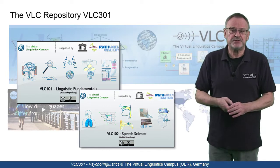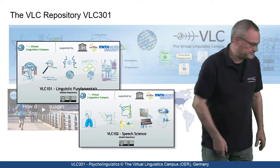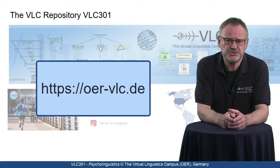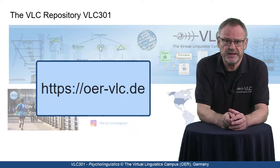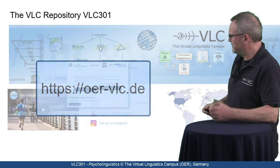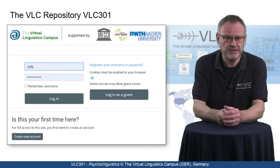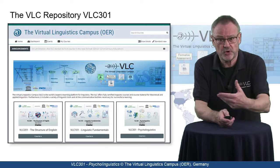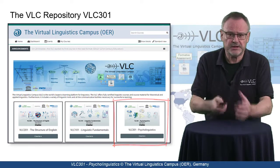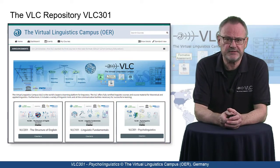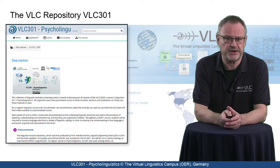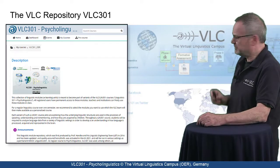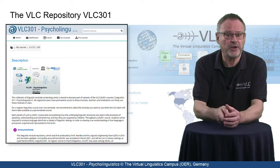Let's now see how you can use VLC 301. If you have an account on the OER VLC website, which is of course free, accessing the repository is simple. Just log in with your personal data and you will find the repository on your personalized dashboard or in your course overview. A click on the tile of VLC 301 leads you to the repository start site where you have access to all modules, starting with a content description and the preliminary section with advice and help on how to use the units.